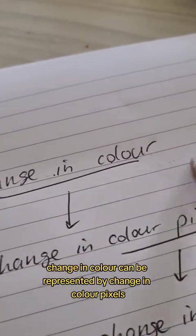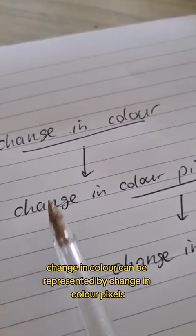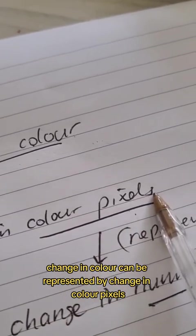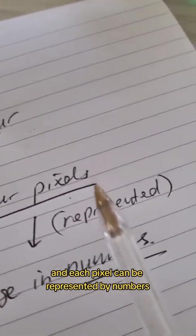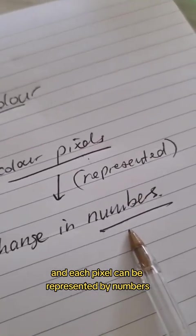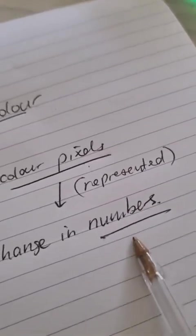And to continue, change in color can be represented by change in color pixels. And each pixel can be represented by numbers. And computers love numbers.